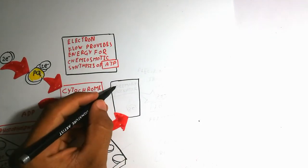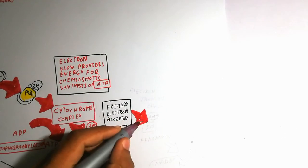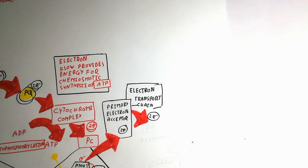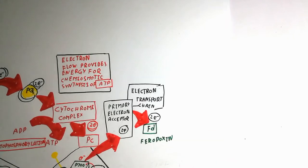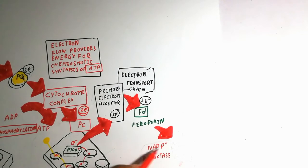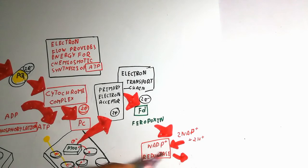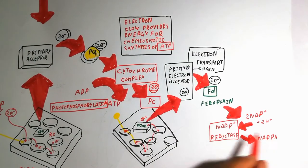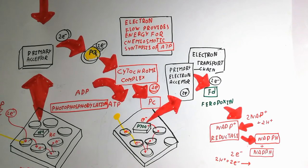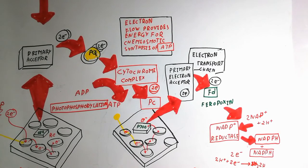At Photosystem I, the electron is again accepted by the primary electron acceptor and passed along the electron transport chain to ferredoxin (Fd). Ferredoxin transfers the electron to NADP reductase. NADP reductase combines NADP⁺ with two protons and two electrons to produce NADPH. Two NAD⁺ plus two hydrogen ions and electrons combine to give two NADPH.